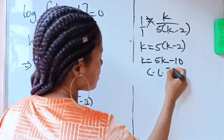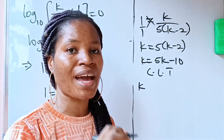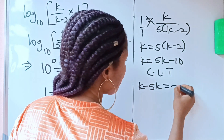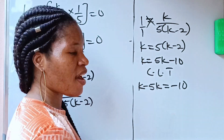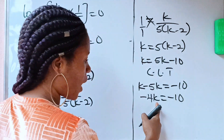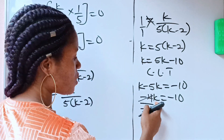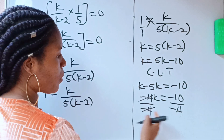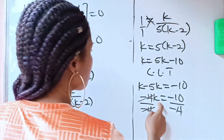Now we collect like terms. The 5k crosses over to become minus 5k, so we have k minus 5k equals minus 10. That gives us minus 4k equals minus 10. To find k, we divide both sides by minus 4, and the minus 4k cancels to leave just k.